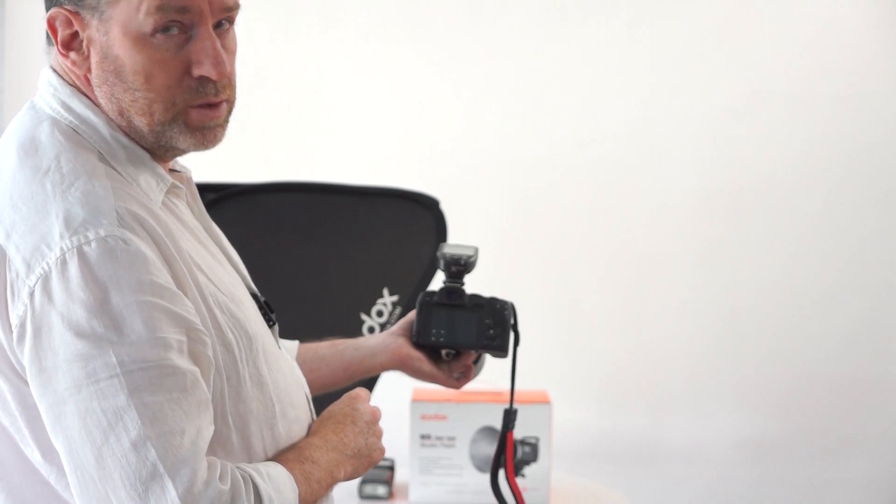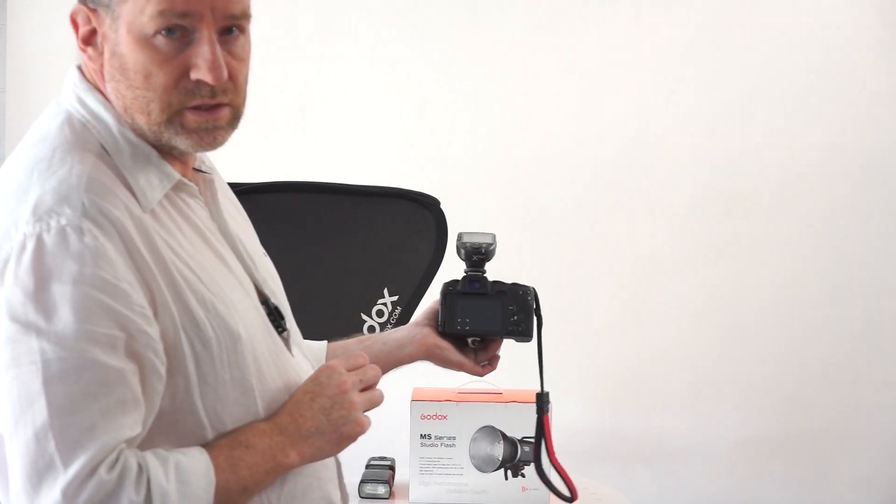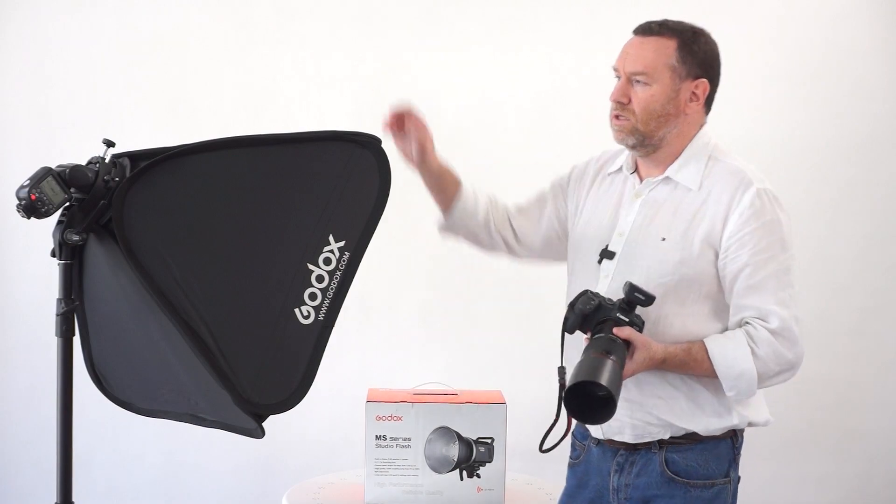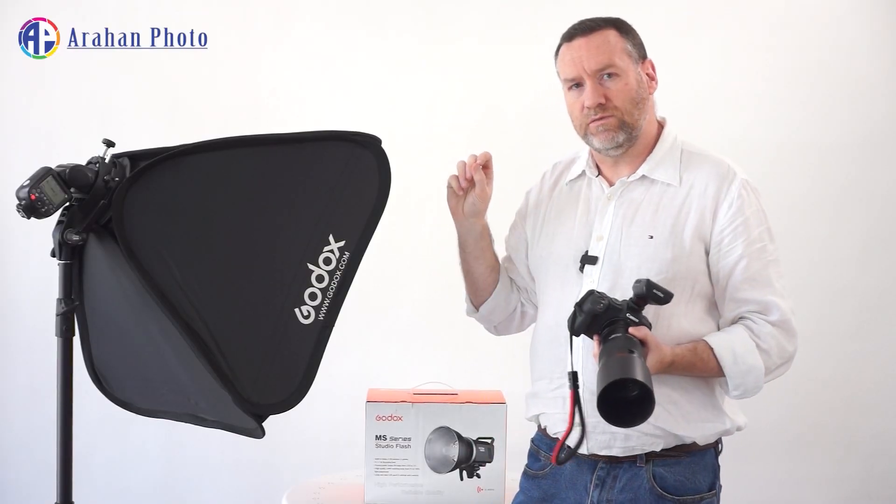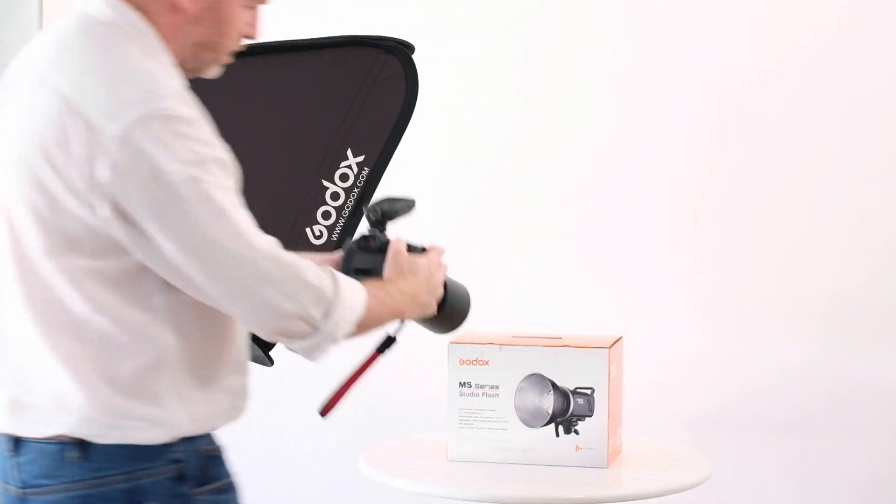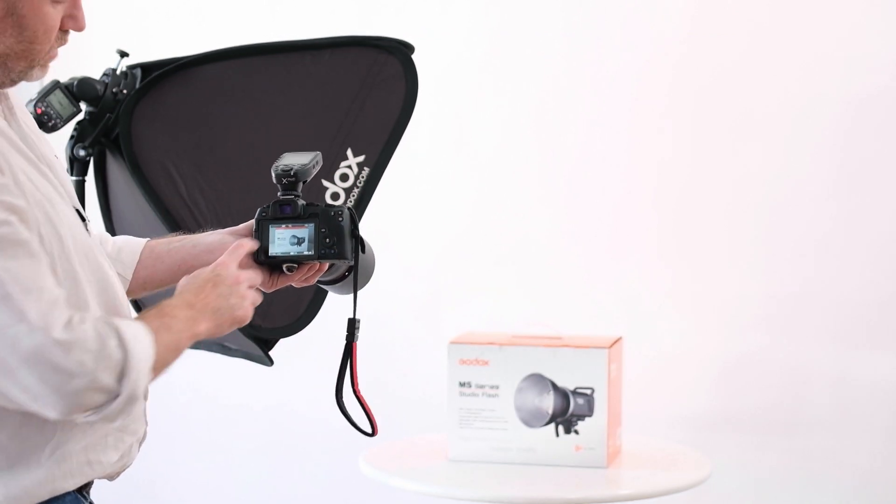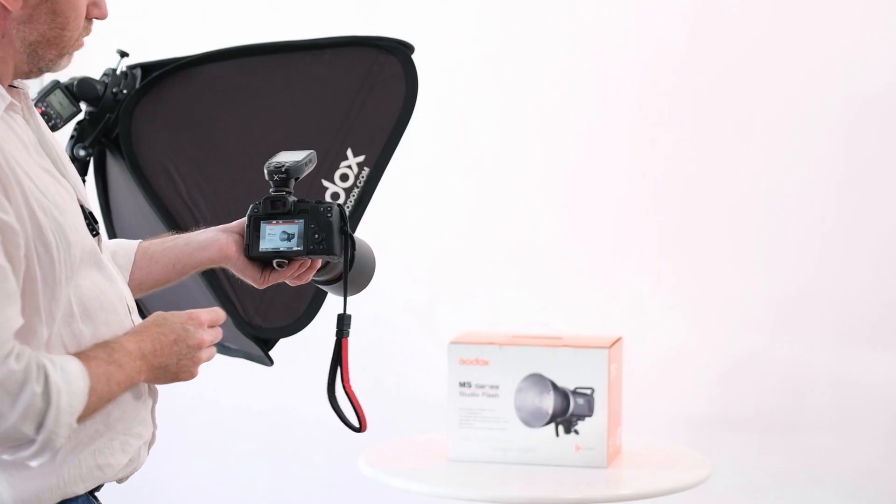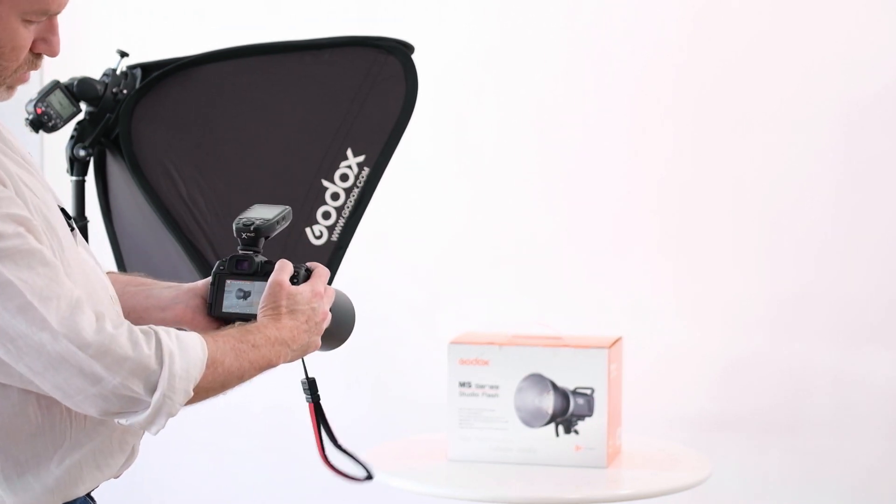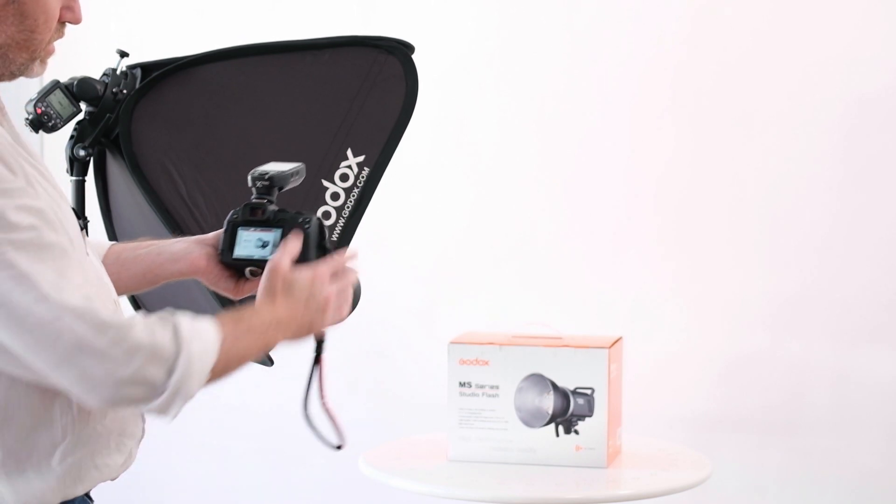We're just going to switch out this flash and try and do the same thing with a V860 speedlight and see what kind of power we get out of that at full power. This time we're using the V860 instead of the MS300. Let's try the same camera settings—f/22, ISO 100. It looks okay, but the MS300 had this area here blinking to indicate overexposure, and we don't have it blinking this time. I can just try going back to f/16, that'll be one stop brighter. I still don't have that blinking, so we're still not at the same exposure yet.